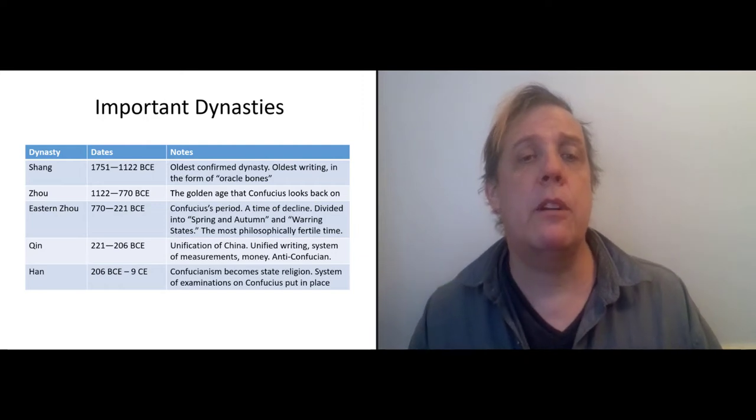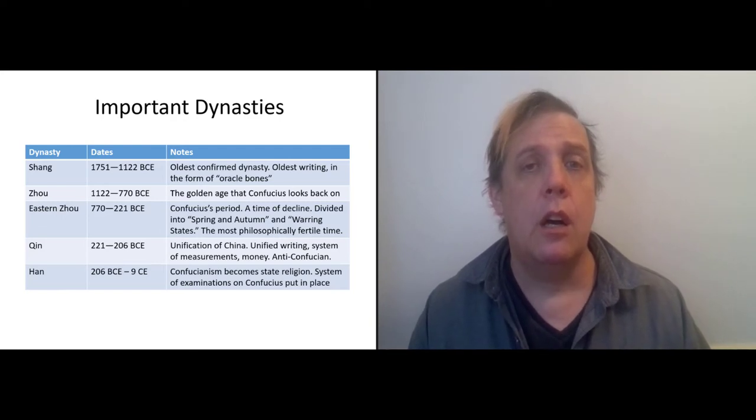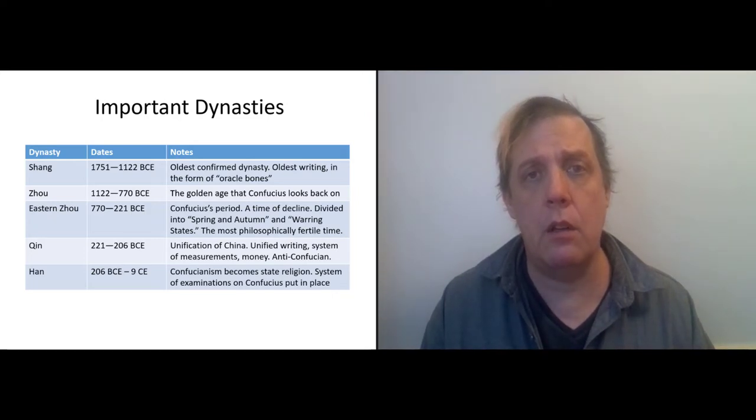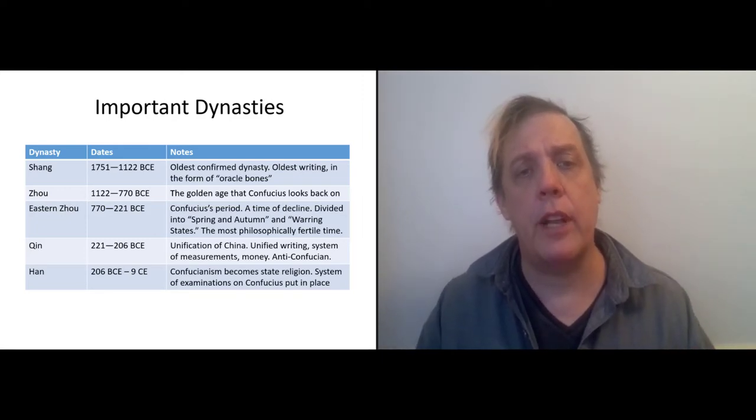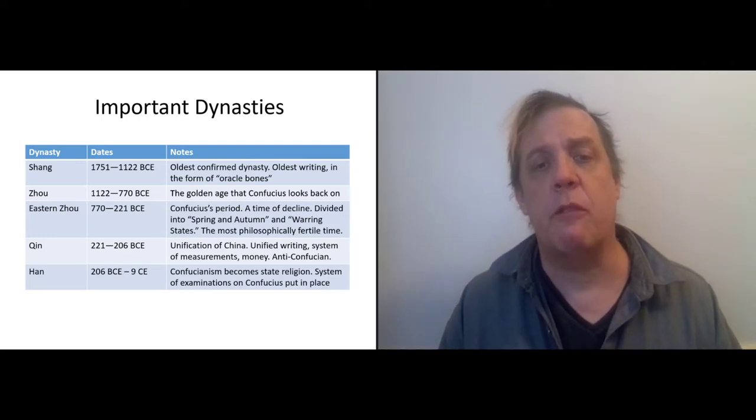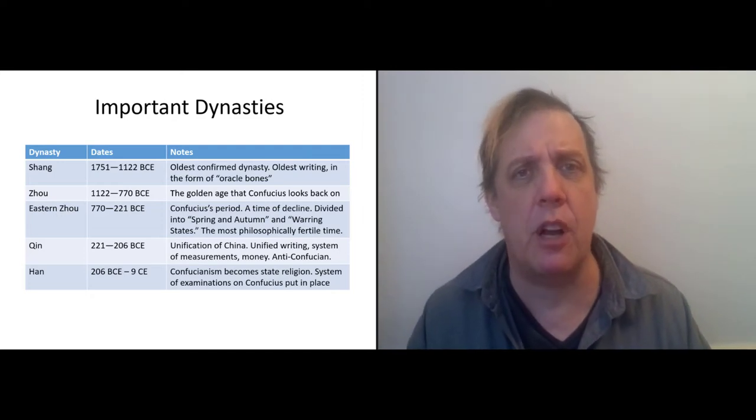His period is called the Eastern Zhou because there was still some semblance of the original Zhou dynasty, and he's living in a province called Lu in the East. All this period of chaos ends after the death of Confucius when the Qin dynasty is formed. And this is thought of as the first unification of China. The Qin Emperor—our English word China comes from Qin.